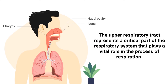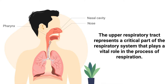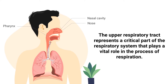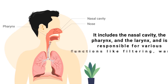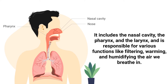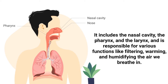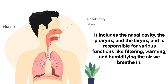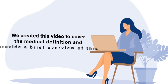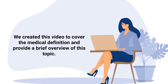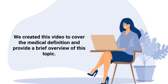The upper respiratory tract represents a critical part of the respiratory system that plays a vital role in the process of respiration. It includes the nasal cavity, the pharynx, and the larynx, and is responsible for various functions like filtering, warming, and humidifying the air we breathe in. We created this video to cover the medical definition and provide a brief overview of this topic.